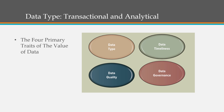There are two types of data: transactional and analytical, with four traits of the value of data. The first trait is data type — is it transactional or analytical? Transactional means straightforward information at a point in time, such as customer order information or a purchase. Analytical is more in-depth data that can be combined with other variables to analyze trends or behavior for business decisions.